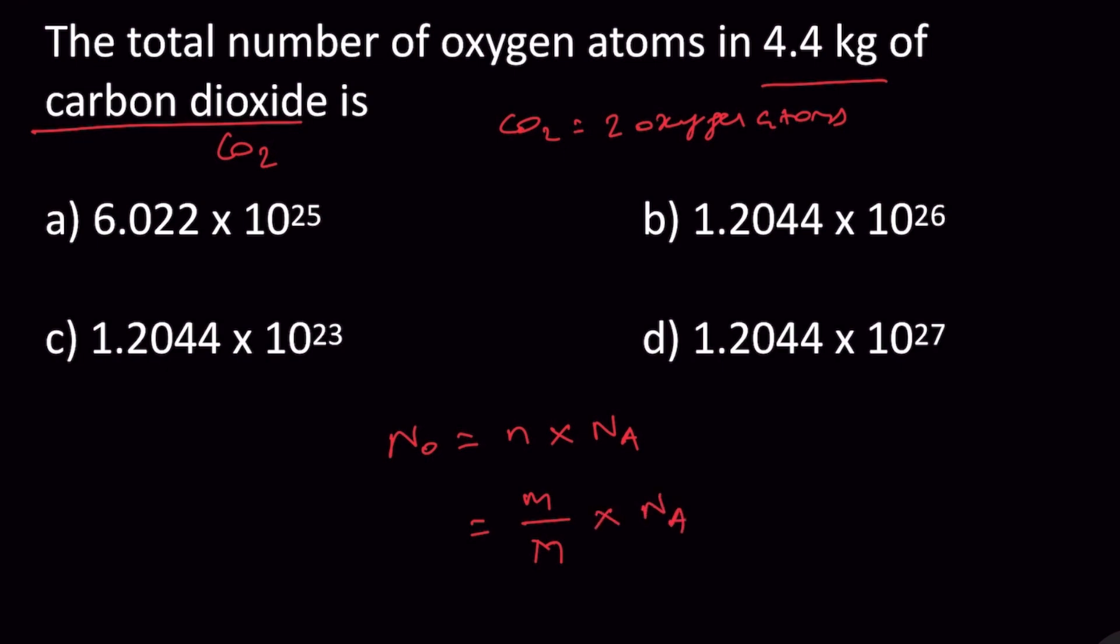Molar mass of CO2 is 44 grams per mole because carbon is 12 and oxygen is 16. So 12 plus 2 times 16 equals 44.